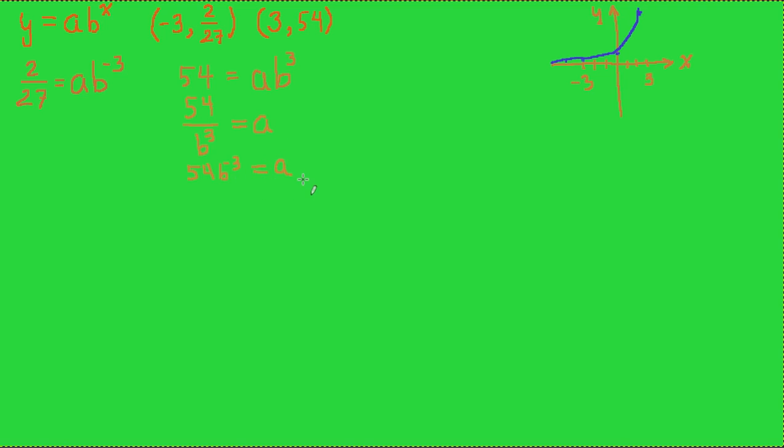We'll substitute that value of a into this other equation. We're going to take this value of a, 54b to the -3 power, and substitute that a value into this other equation right here. So 2/27 is equal to 54b to the -3, that's what the a value is, times b to the -3. Now this equation only involves b's so that we can solve for b.